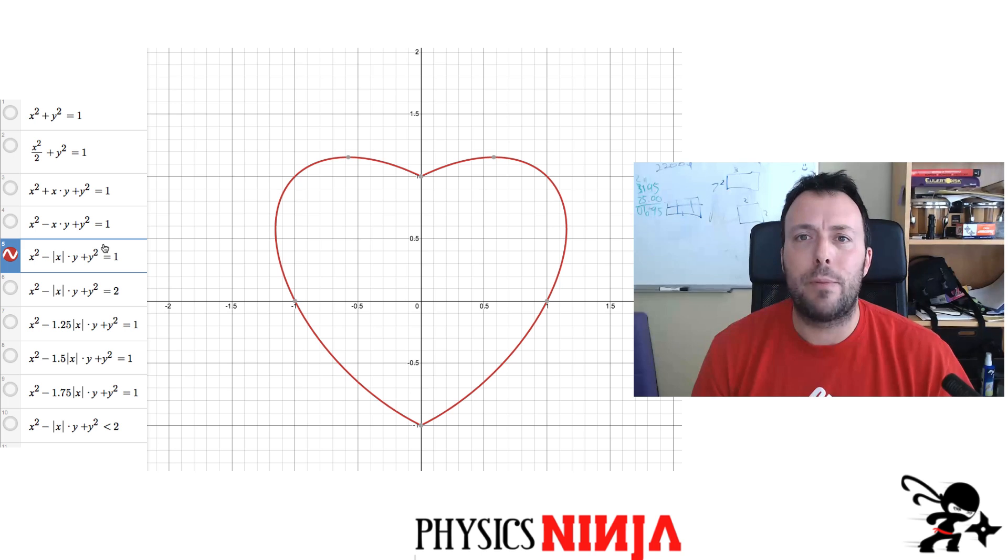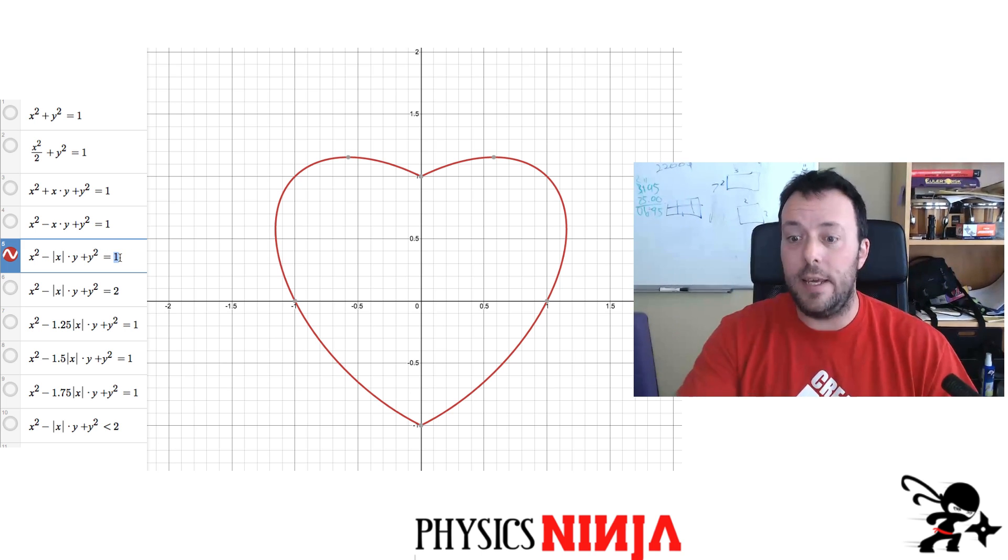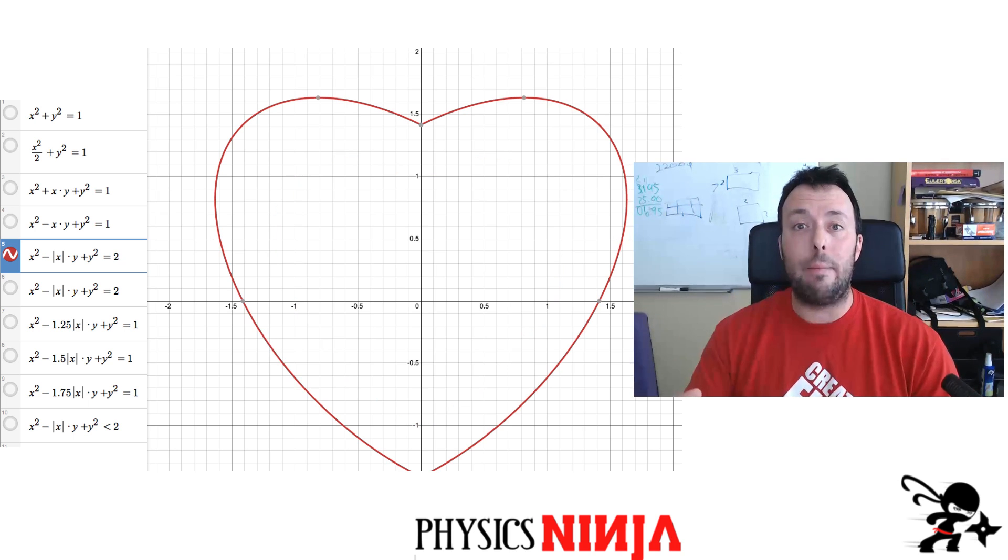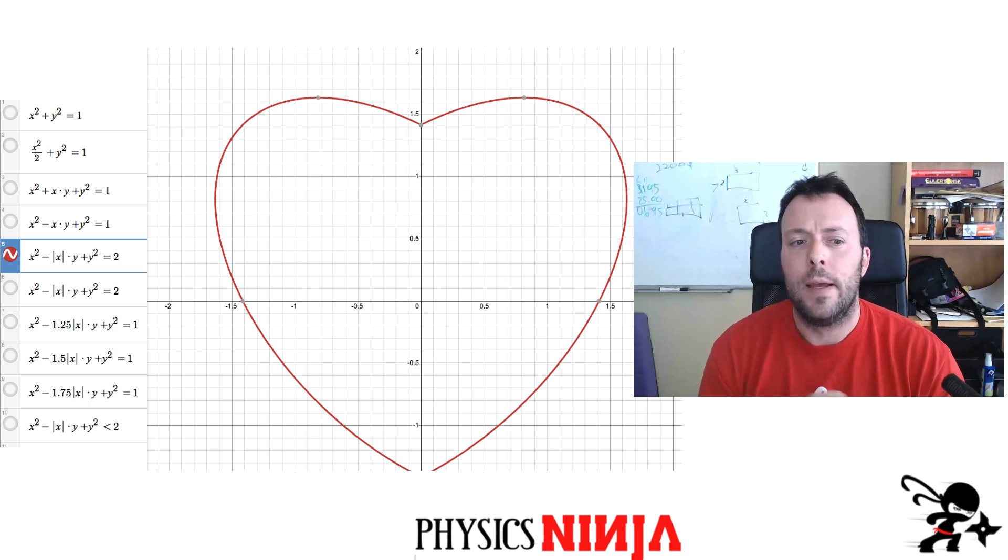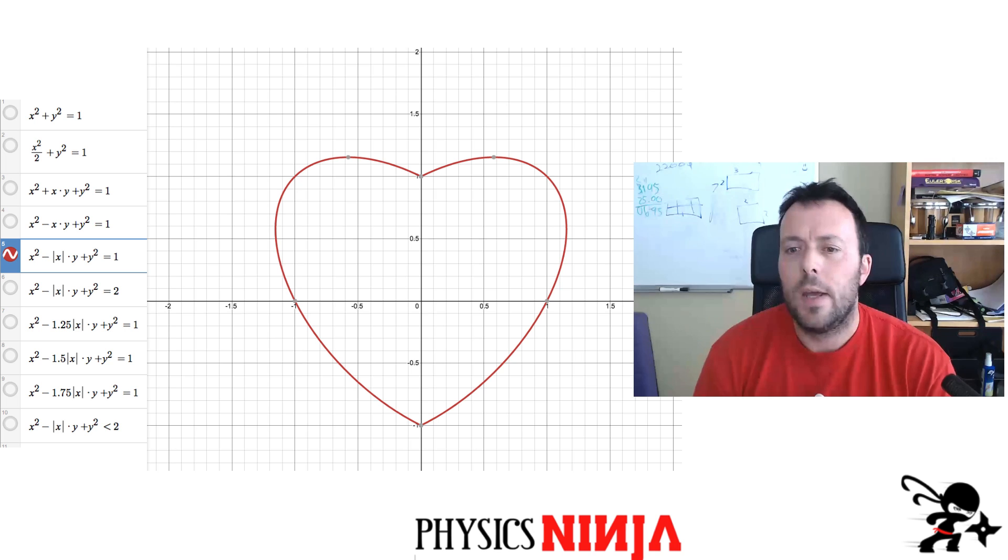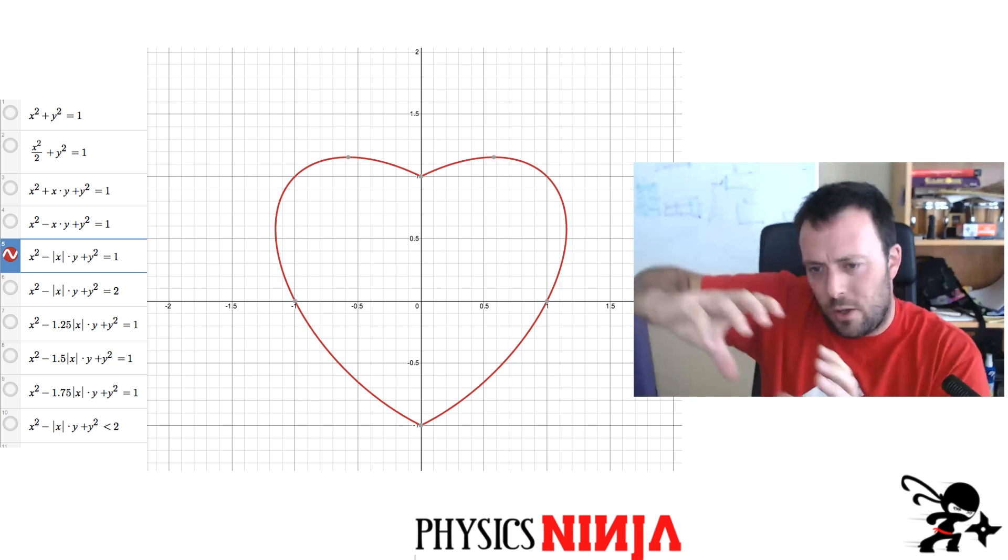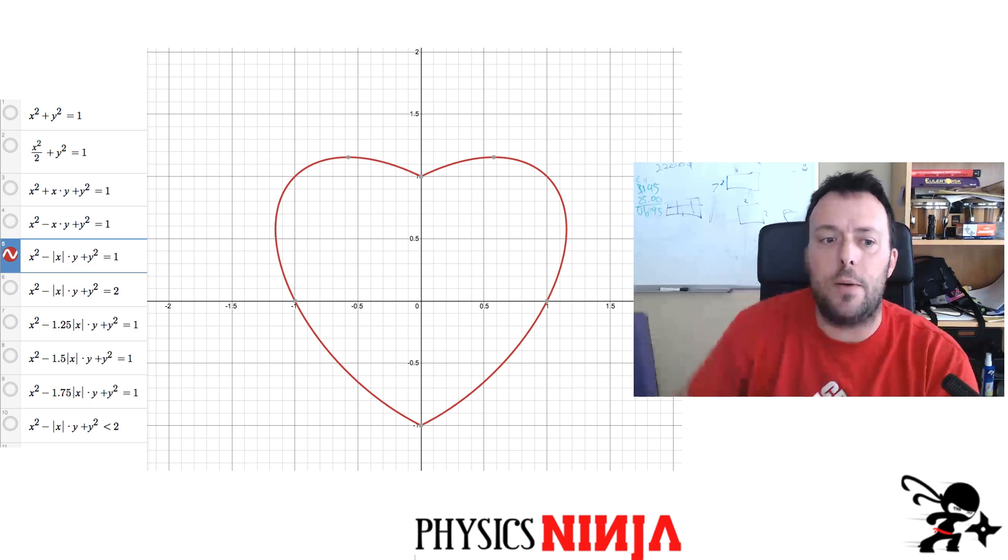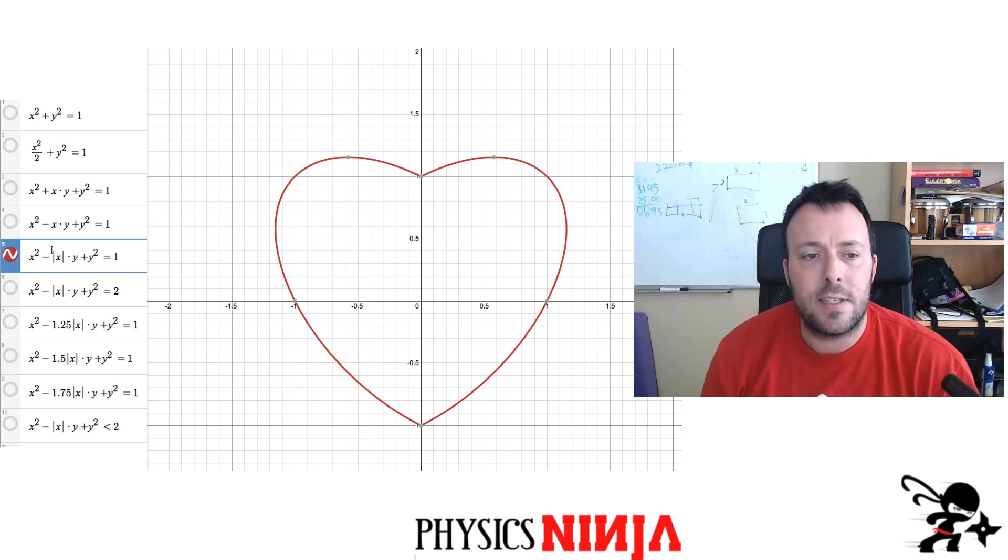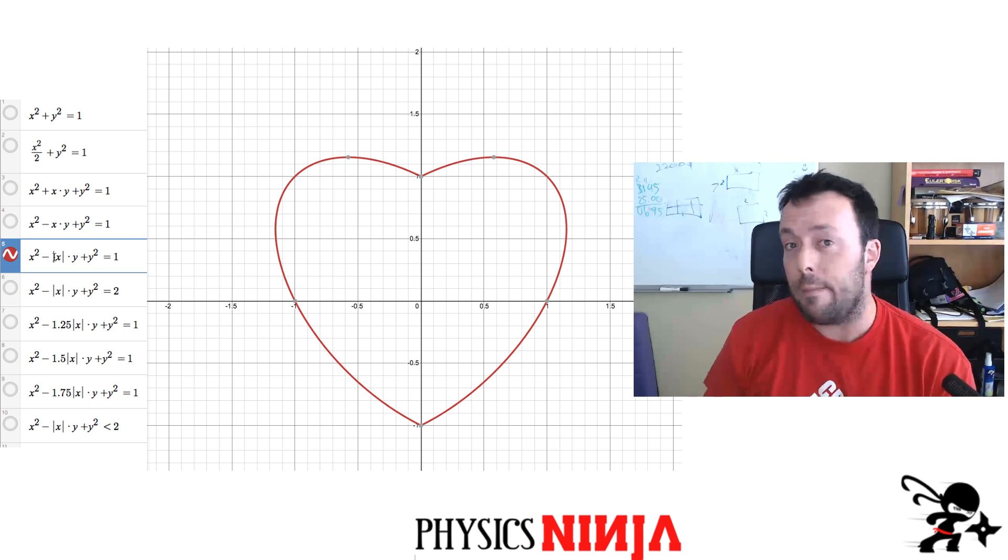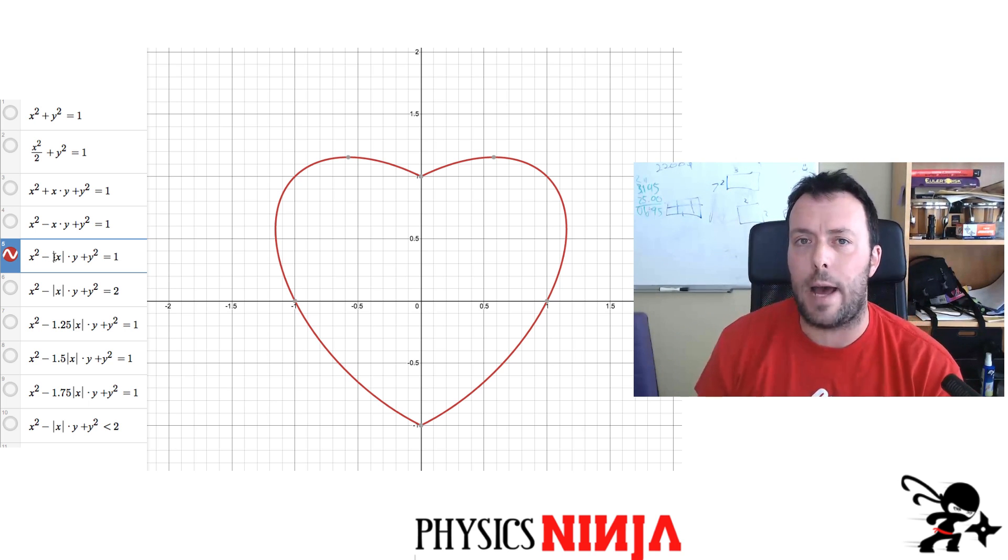What happens now if I play with some of these coefficients? I may want a bigger heart. So instead of the heart being equal to one, what if it's equal to two? Two will make it a little bit bigger. That's kind of cool. The other thing you might want to do now is, let's go back to size one. You may want to just alter the shape a little bit. Those ellipses, I may want to stretch them out a little bit. So one thing I could do is instead of having the one in front of the absolute value of x, I can make that number a little bit bigger. Let me show you what happens in that case.